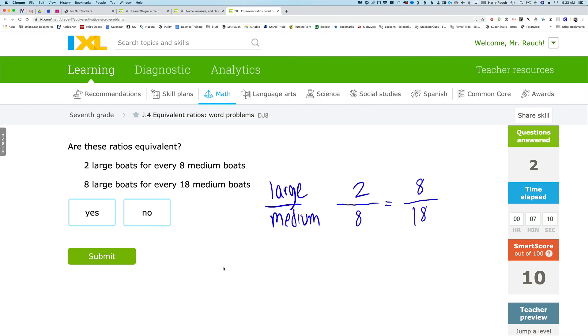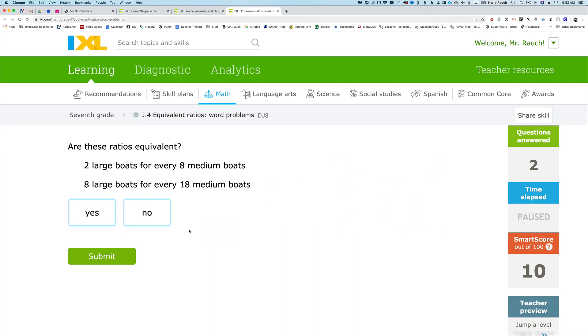The second way that I could think about it would be cross multiplying, because if they're equivalent, their cross products would be equal. And so I can multiply 8 times 8, which is 64, and 2 times 18, which is 36, where I can see that indeed, this is not equivalent ratios. And so we will go ahead and click no and submit.